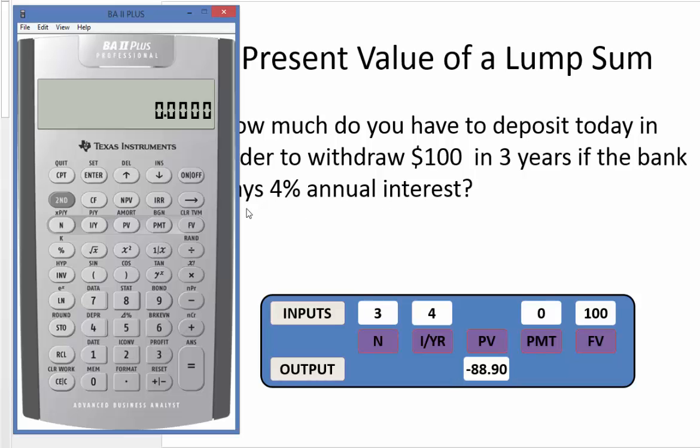We use a calculator to enter the number of periods. In this case it's three. We have four, the interest rate is 4%. Our payment is zero because it's a lump sum. We don't have constant payments. And then our future value will be $100. That's the goal to have $100 accumulated in three years.